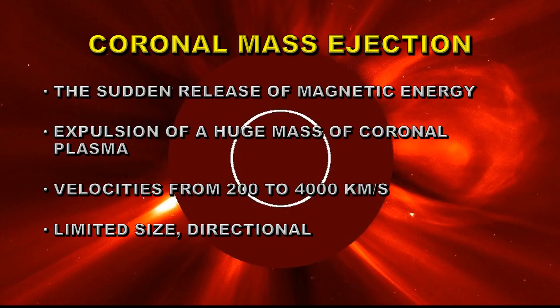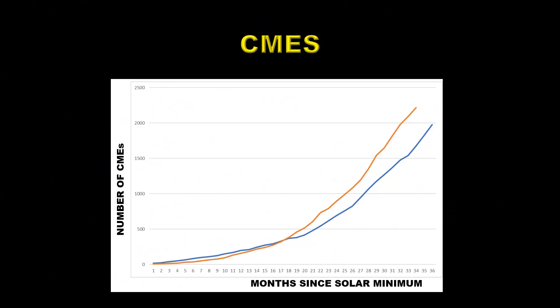Coronal mass ejections are a sudden release of magnetic energy — similar to flares — but instead of producing a pulse of radiation, they expel a huge mass of coronal plasma from the sun. Velocities can range from 200 to 4,000 kilometers per second. They are limited in size and directional — not isotropic like flares — so not all of them hit the Earth. Comparing CME numbers for Solar Cycle 25 versus Solar Cycle 24, Solar Cycle 25 is the orange curve and is outperforming Solar Cycle 24 quite significantly — once again indicating that Solar Cycle 25 is much more active.